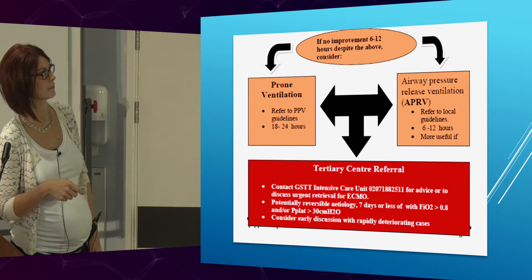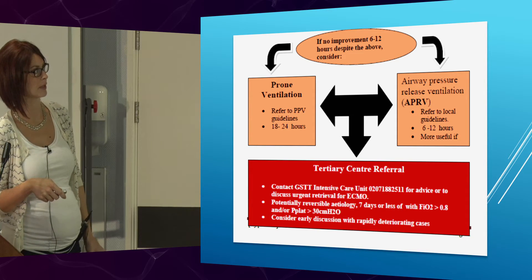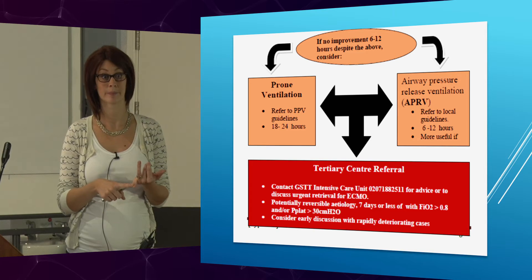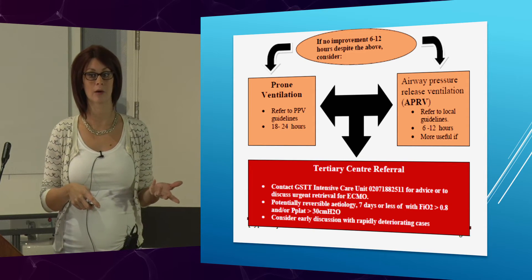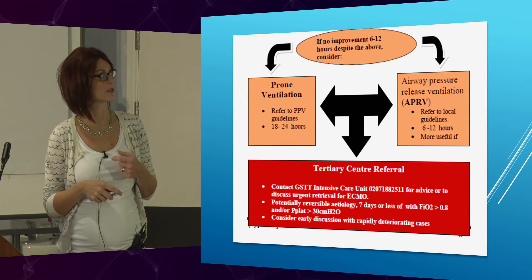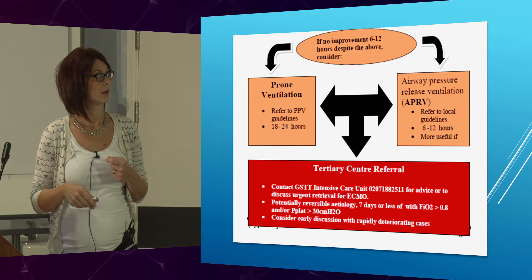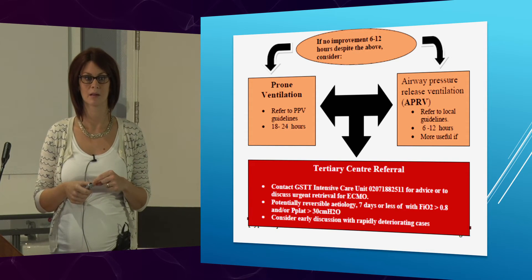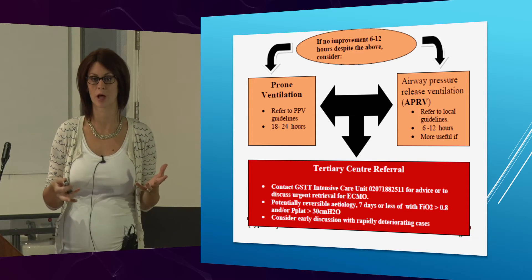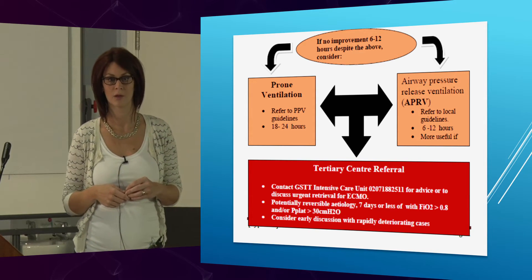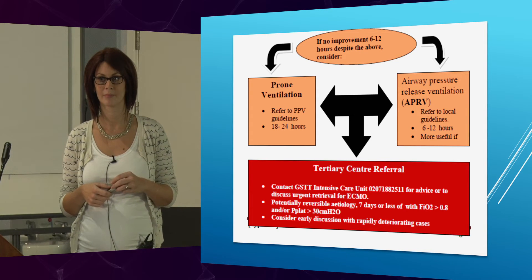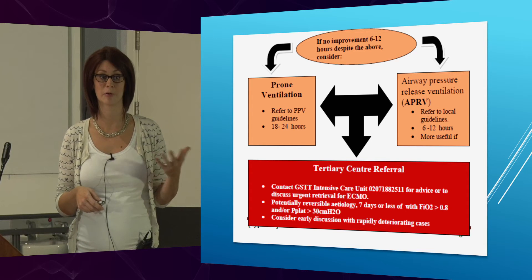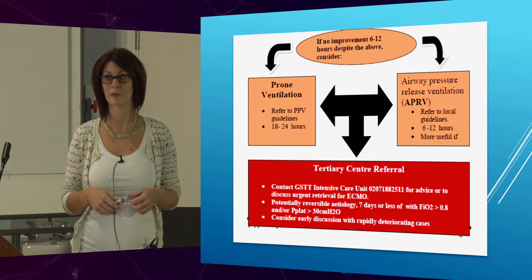If you've got your patient on conventional ventilation and after six to twelve hours there doesn't seem to be an improvement, when you do your PV recruitment you want to find out two things: one, whether they're recruitable, and if they have got a recruitable lung, then what we do in our unit is put them onto a recruitment mode of ventilation, which is APRV. From experience, if a patient is on 100% oxygen and you've put them onto APRV, normally within six hours you'd expect that FiO2 to be below 50%.